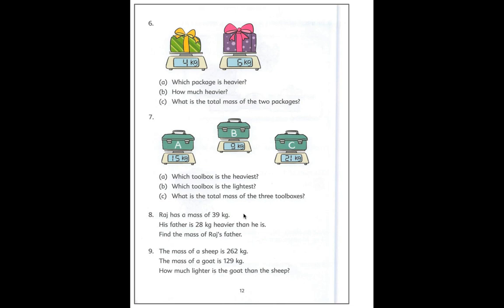Now I want you to have a piece of paper and a pencil next to you and I want you to draw a bar model to solve this problem. I will read the problem and then I'll ask you to pause the video so that you can solve it and then we'll look at the answers together. Raj has a mass of 39 kilograms. His father is 28 kilograms heavier than he is. Find the mass of Raj's father. So please pause the video, draw your bar model, it is a comparison bar model, and show us all your work and your answer statement.